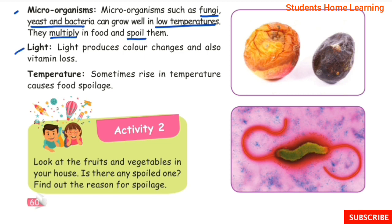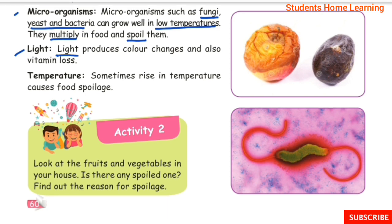Light produces color changes and also vitamin loss in food. Temperature: Sometimes a rise in temperature causes food spoilage.